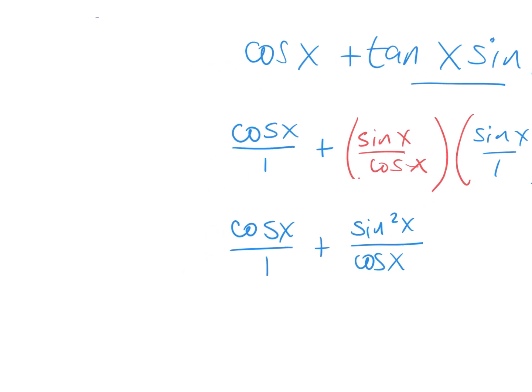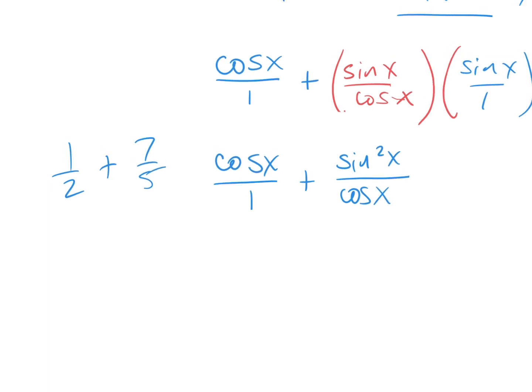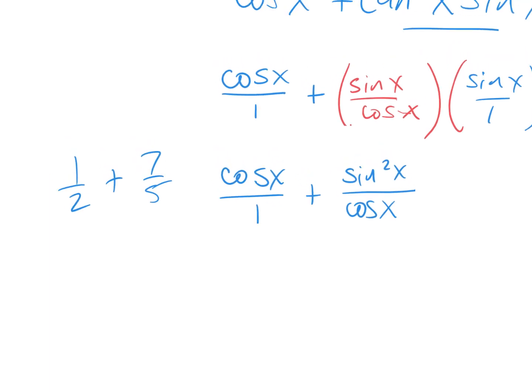Think algebraically: I have cosine x over 1 plus sine squared x over cosine. What's my common denominator? Cosine of x. For the first fraction, I multiply top and bottom by cosine — cosine times cosine is cosine squared. The second one already has cosine, so just leave it: plus sine squared. Now I have cosine squared plus sine squared over cosine x.